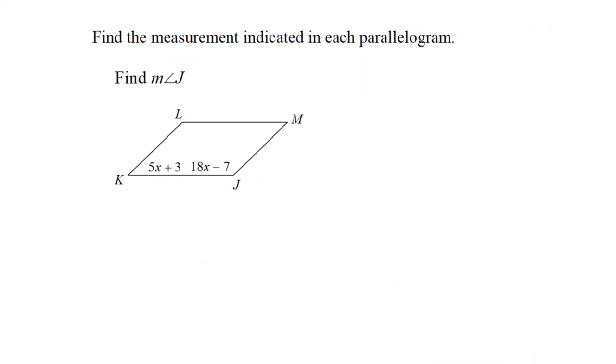Find the measurement indicated in each parallelogram. This feels like not enough information, but there's something about parallelograms. In a parallelogram, any two consecutive angles must add up to 180 because the whole thing is 360. So add these two together.